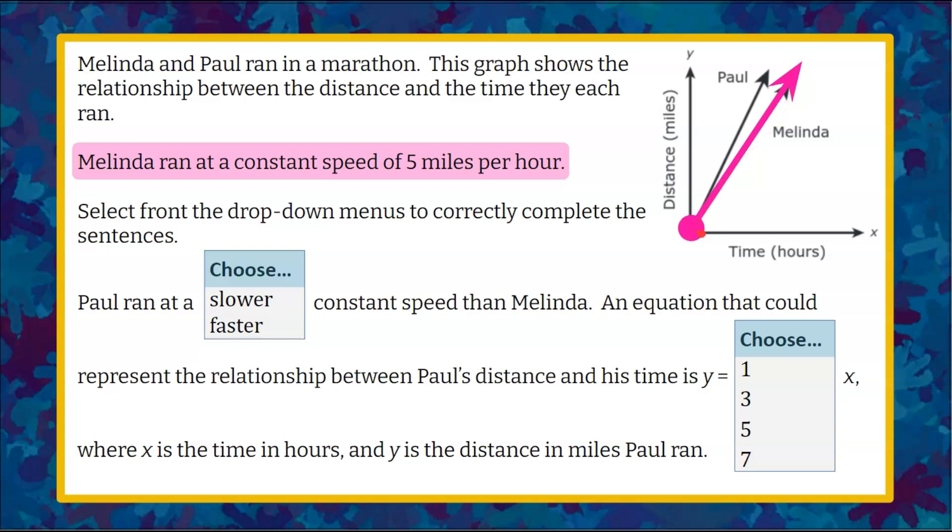That unit rate, because this is a proportional relationship passing through the origin, tells me the slope of the line. So that means that this is increasing 5 miles every hour. 5 miles every hour is how fast Melinda is running.